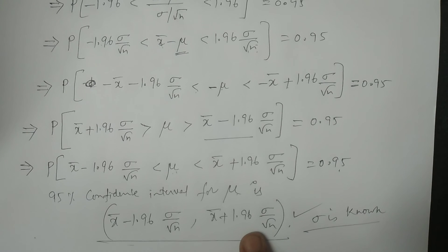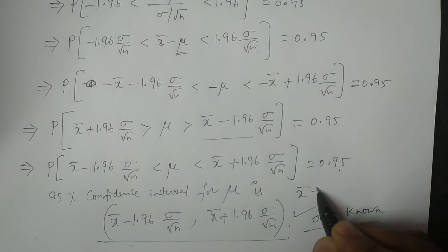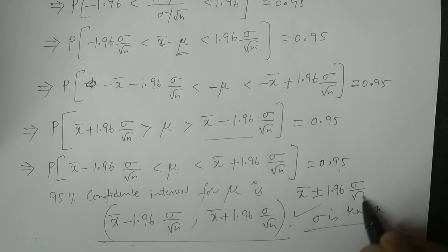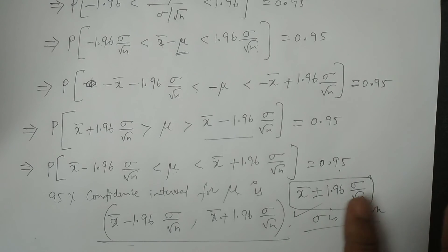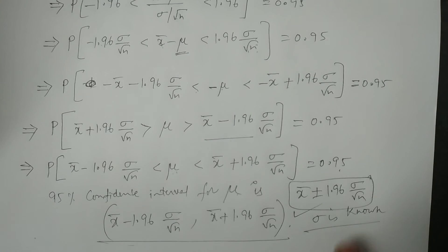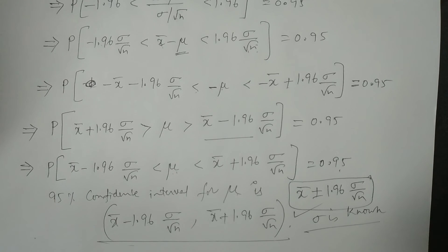In some textbooks, the confidence limits are also specified as x̄ ± 1.96 × sigma/root n for the population mean mu when sigma is known. We must keep in mind that we use the normal distribution and sigma when sigma is known. This is the 95% confidence interval for the population mean mu when sigma is known in the normal population. Thank you so much.